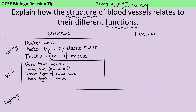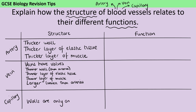Because all of these layers in veins are thinner, veins have a much larger lumen — a larger hole in the middle — than arteries, and certainly larger than capillaries, whose lumen is absolutely tiny. Speaking of capillaries, they have walls that are only a single cell thick.